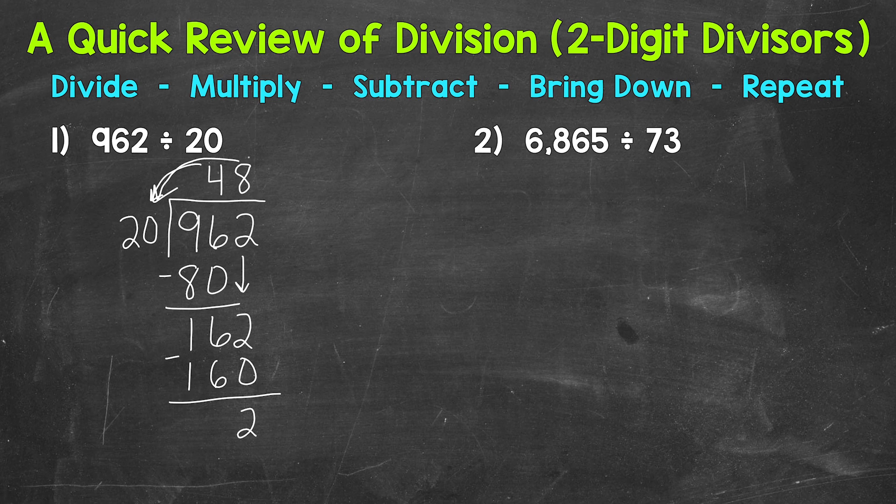Now after subtracting, we bring down. But we don't have anything to bring down. We went all the way over to the 1's place. So that 2 is going to be our remainder. So 48 remainder 2 is our answer.